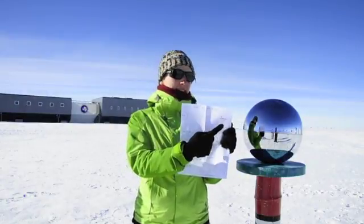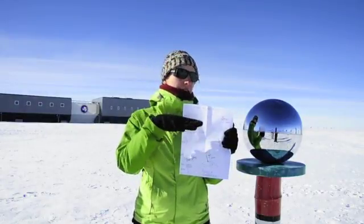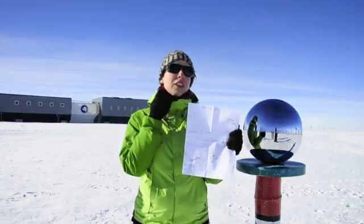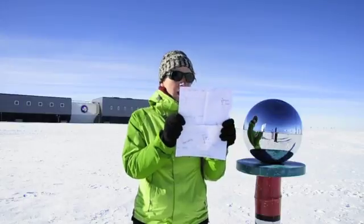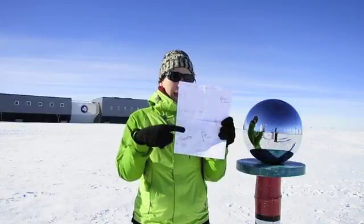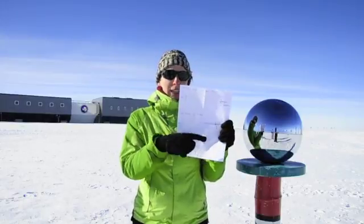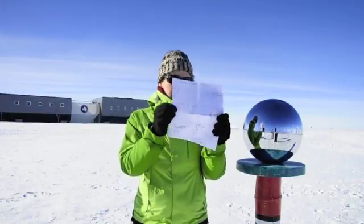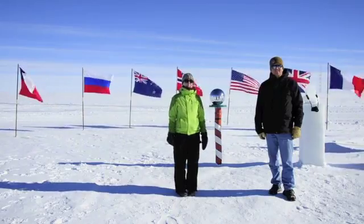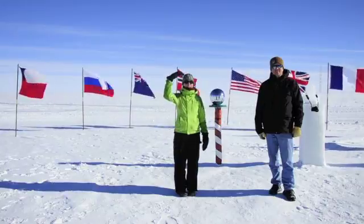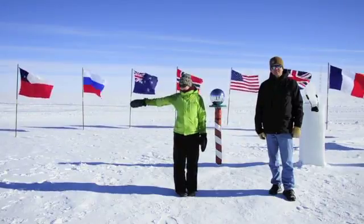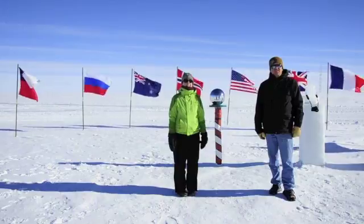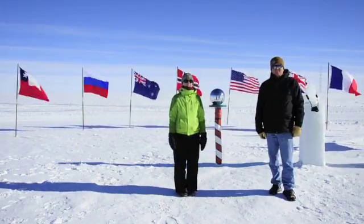If the earth wasn't tilted, the sunlight would travel here at the pole and create a shadow that would go on forever. However, the earth is tilted. We can prove that by taking an object, such as myself or the pole, and measuring the shadow. So right now we're going to test this out by measuring the length of me and the length of my shadow. We can do some geometry to calculate the tilt of the earth's axis.